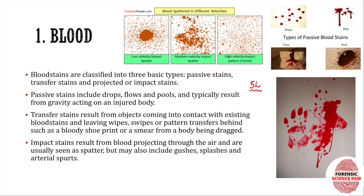Blood can be found at the crime scene in the form of blood stains, which are of three types: passive, transfer, and projected or impact stains. Passive stains include drops, drips, clots, or pools of blood, and are typically formed due to the action of gravity — for example, if someone has an injury on their hand, blood will ooze out and fall directly to the ground because of gravity.